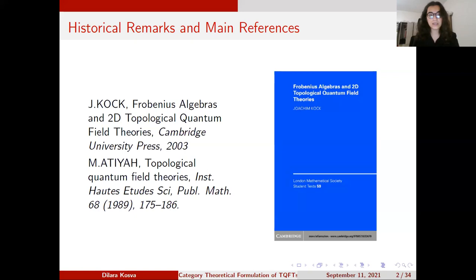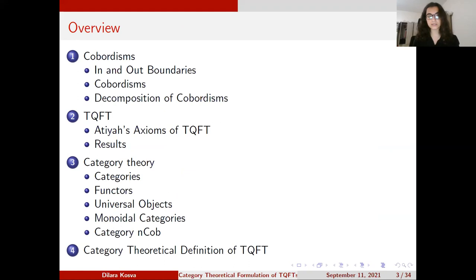Here is the overview. We will first talk about cobordisms and some differential topology, then state Atiyah's axioms of TQFT and make sense of them. Afterwards, we will need some vocabulary from category theory, so we will discuss some categorical definitions. Finally, I will be able to give the categorical definition of the TQFT. The main purpose of this presentation is to restate Atiyah's axioms using just one categorical sentence.